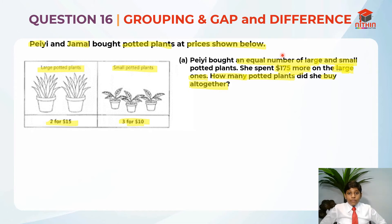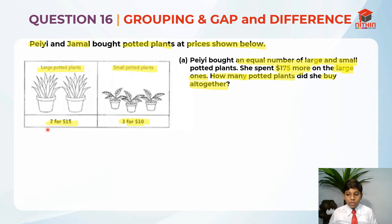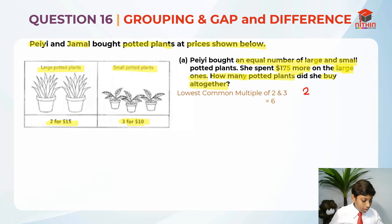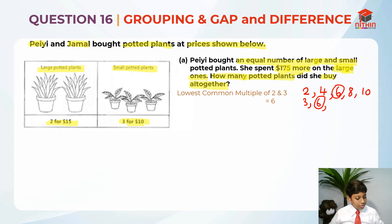Since the question tells us Payee bought an equal number of large and small, and the pricing is 2 for $15 and 3 for $10, the numbers 2 and 3 are not the same. So we need to find the lowest common multiple of 2 and 3, which is 6. Listing multiples of 2: 2, 4, 6. Multiples of 3: 3, 6. So 6 is the lowest common multiple.